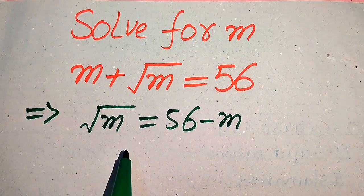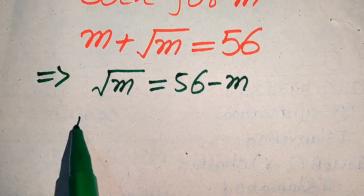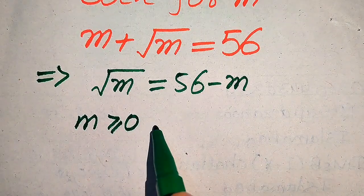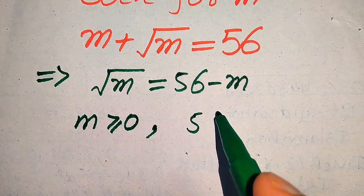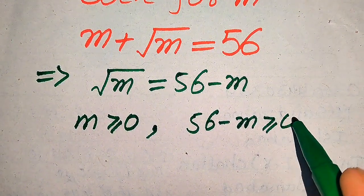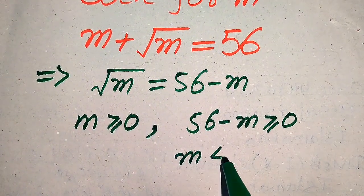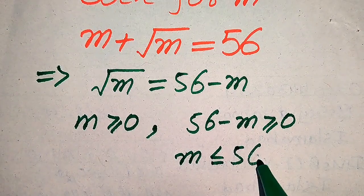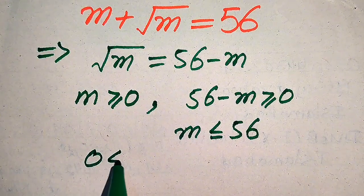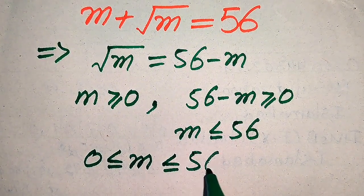In order to find the real root of this equation, on the left hand side m must be greater than or equal to 0 for the real solution. And on the right hand side, 56 minus m is also positive, which means 56 minus m is greater than or equal to 0, and from here we get m is less than or equal to 56.